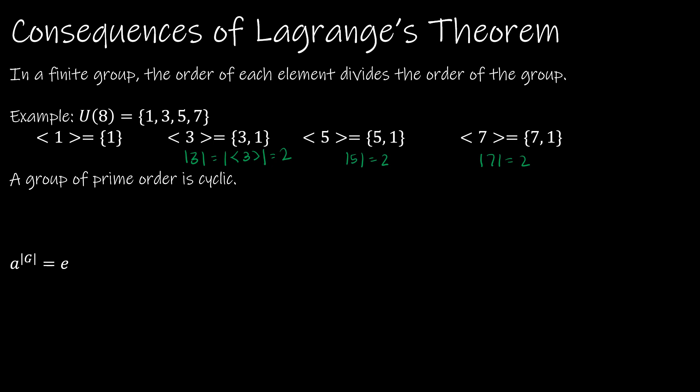The next corollary is that a group of prime order is cyclic. That makes sense because the only possible subgroup orders are 1 and the prime itself — there are no other factors — so any non-identity element must be a generator.